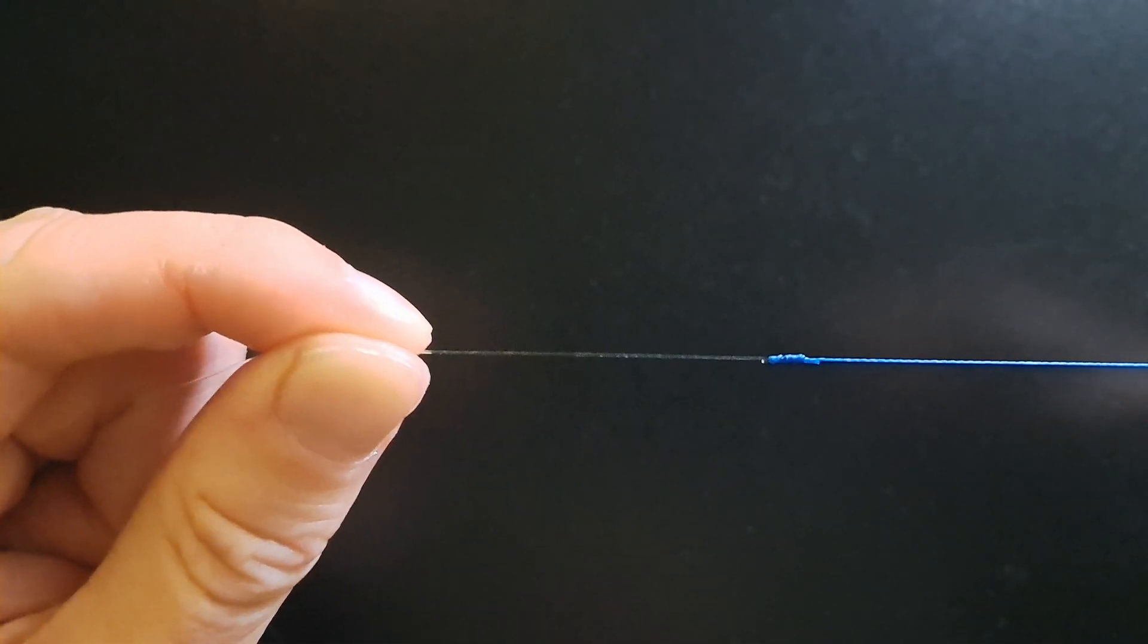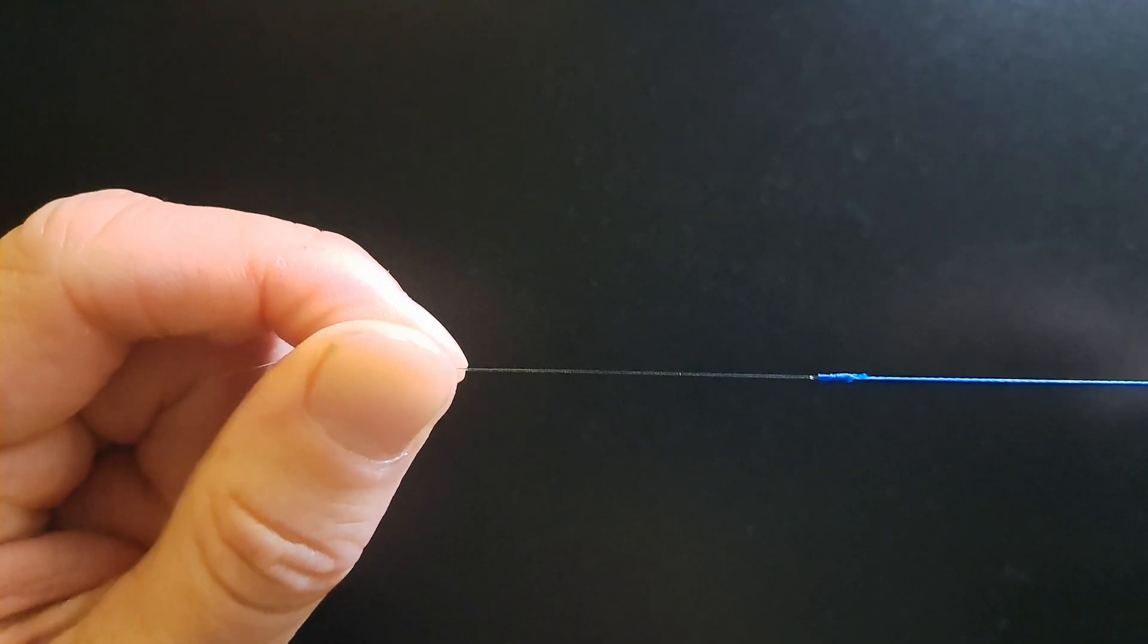We're going to be tying this Albright knot. This is the main knot that I use for tying two pieces of line together.